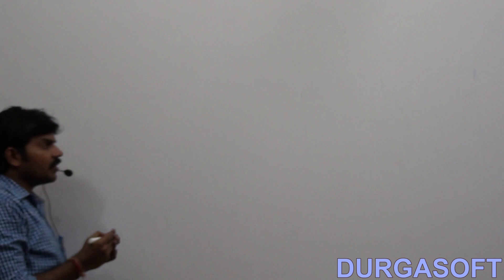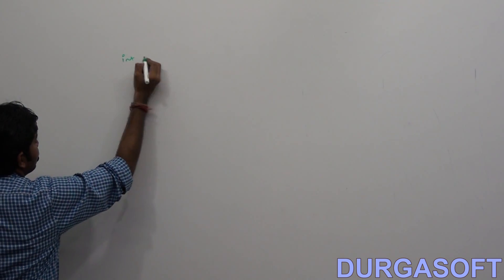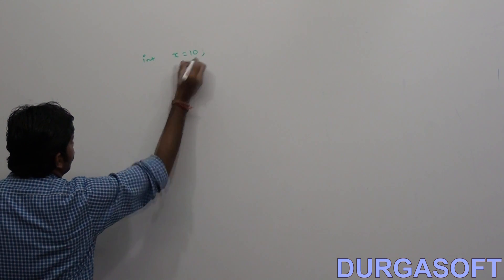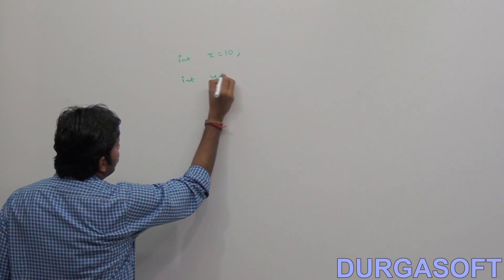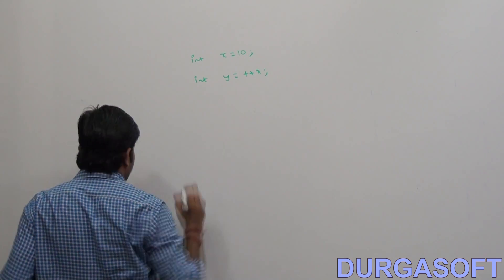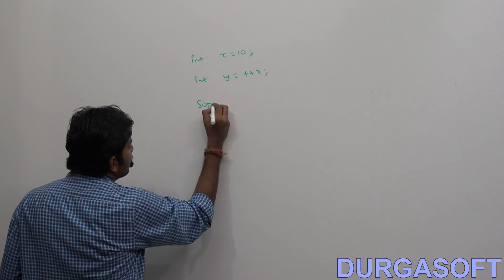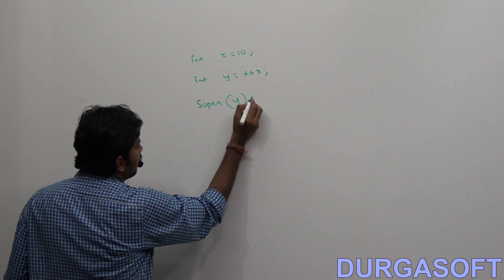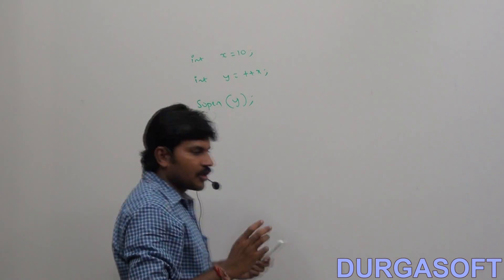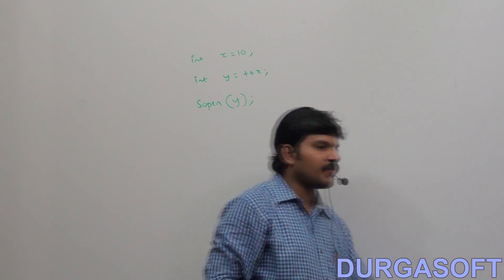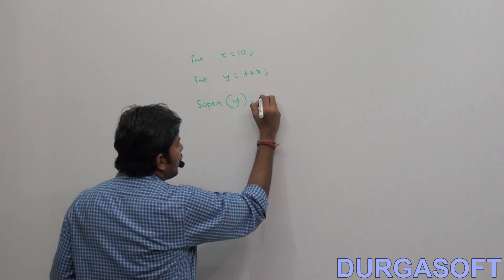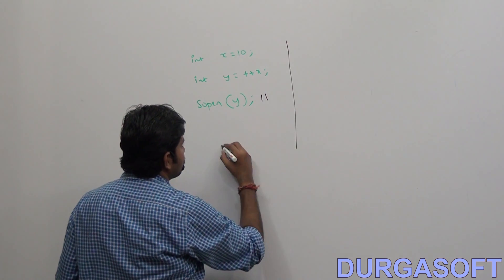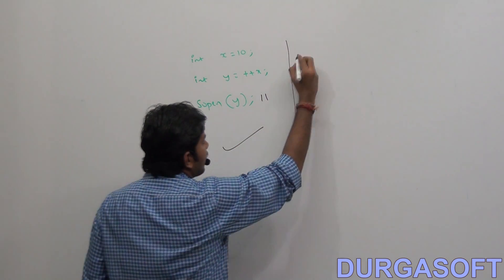Here, I'm taking: int x equals 10, int y equals ++x, System.out.println(y). Can you tell what answer you are going to get by default? SOP of y — the answer is 11 itself. There is no doubt at all.